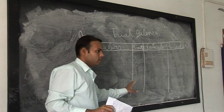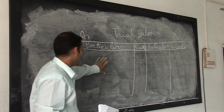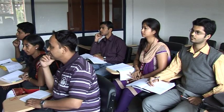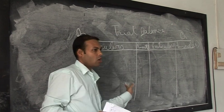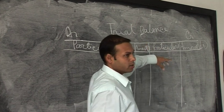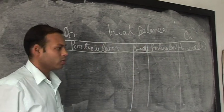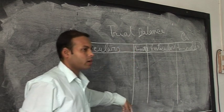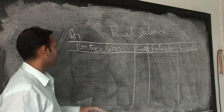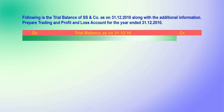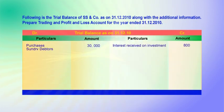Credit-side ledger balances are recorded on the credit side of the trial balance. So debit balances of ledger go to the debit side, and credit balances go to the credit side of the trial balance. Let us prepare this with imaginary figures. Purchases: 30,000 — this is the debit side of the trial balance. Purchases: 30,000. Sundry debtors: 40,000.